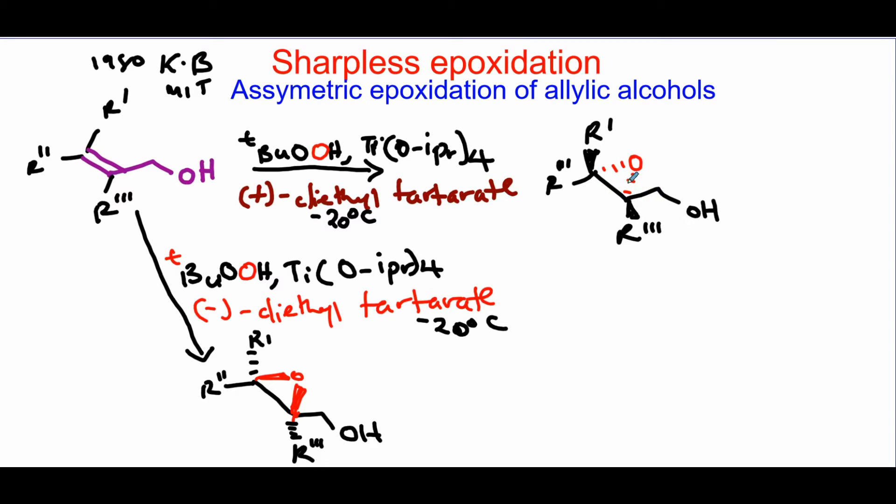But if you use the minus chiral ligand of the tartrate, then you're going to end up with the wedged epoxide only.